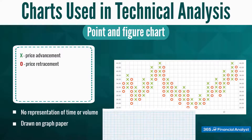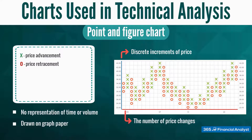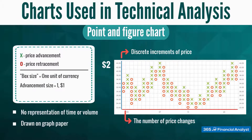Interestingly, there is no representation of time or volume. The chart is always drawn on graph paper to facilitate seeing the columns and rows. The vertical axis measures discrete increments of price, while the horizontal axis shows how many times a stock price changed. An analyst can choose a one-dollar chart, two-dollar chart, or any other increment. To construct the chart, the analyst must determine both the box size and the reversal size. The most commonly used box size is one unit of currency, referring to the amount of price change represented by the height of each box — the width has no meaning.